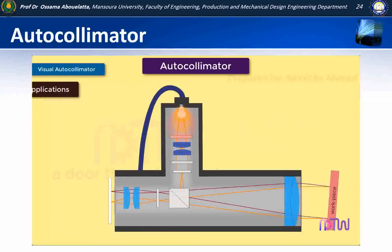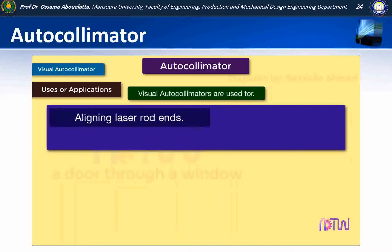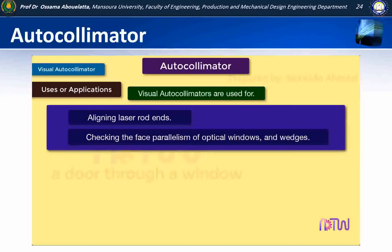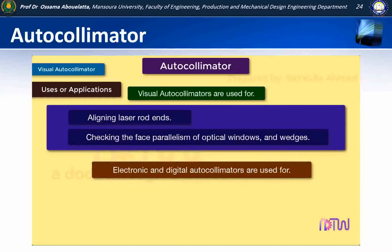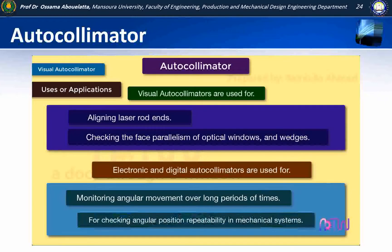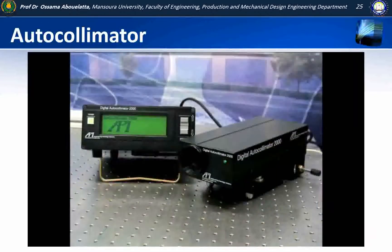Uses and applications of autocollimator: Visual autocollimators are used for aligning laser rod ends and checking the face parallelism of optical windows and wedges. Electronic and digital autocollimators are used for monitoring angular movement over long periods of time and for checking angular position repeatability in mechanical systems. The digital autocollimator is a general purpose instrument designed to measure very small angular displacements in both the laboratory and machine shop environment.